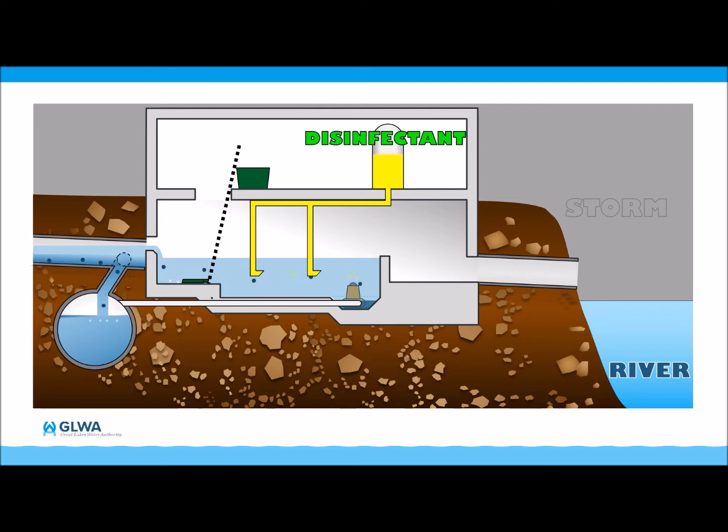When a storm is heavy enough or lasts long enough to completely fill the retention basin, it overflows to a channel that leads to the river. When the basin begins overflowing, the discharge is commonly referred to as combined sewer overflow or CSO.